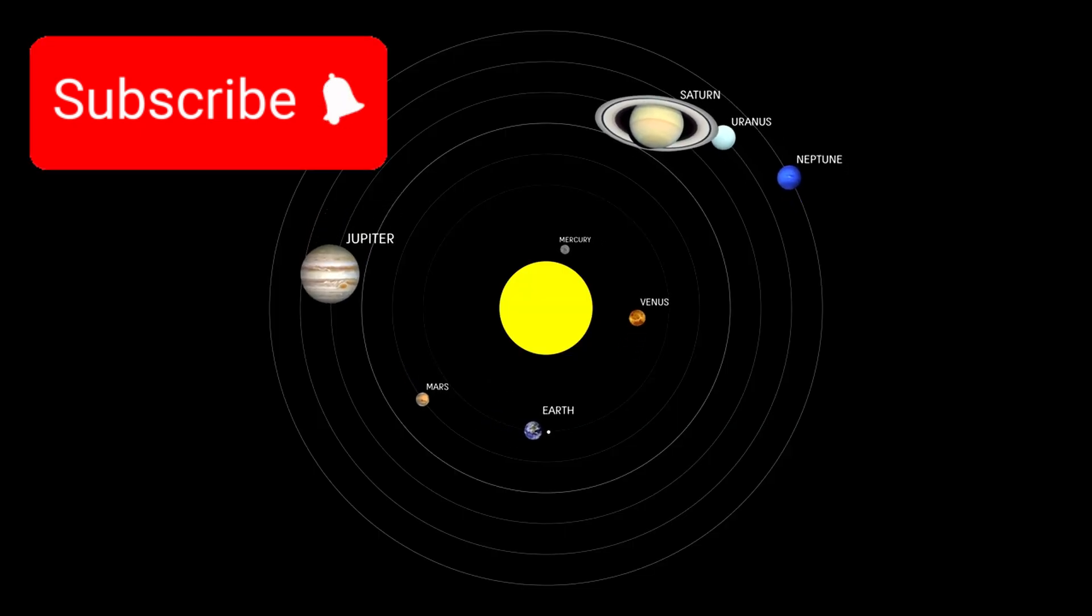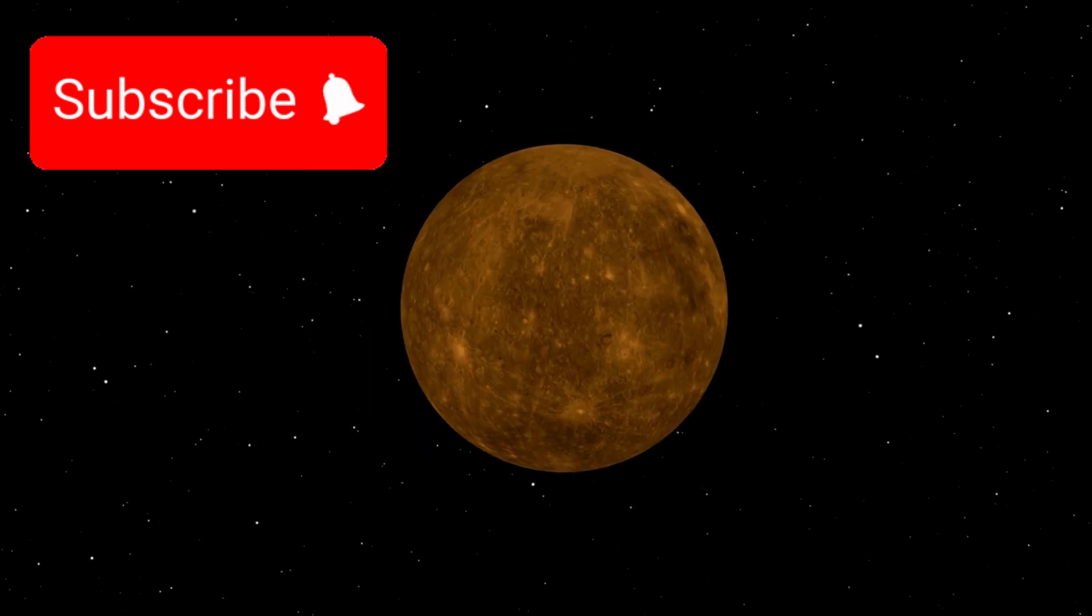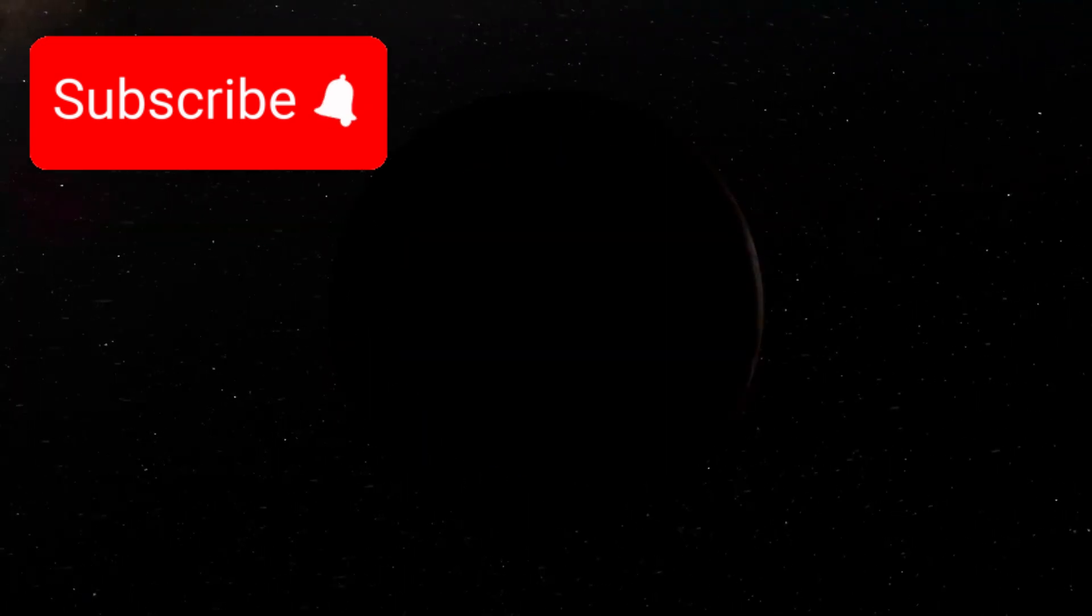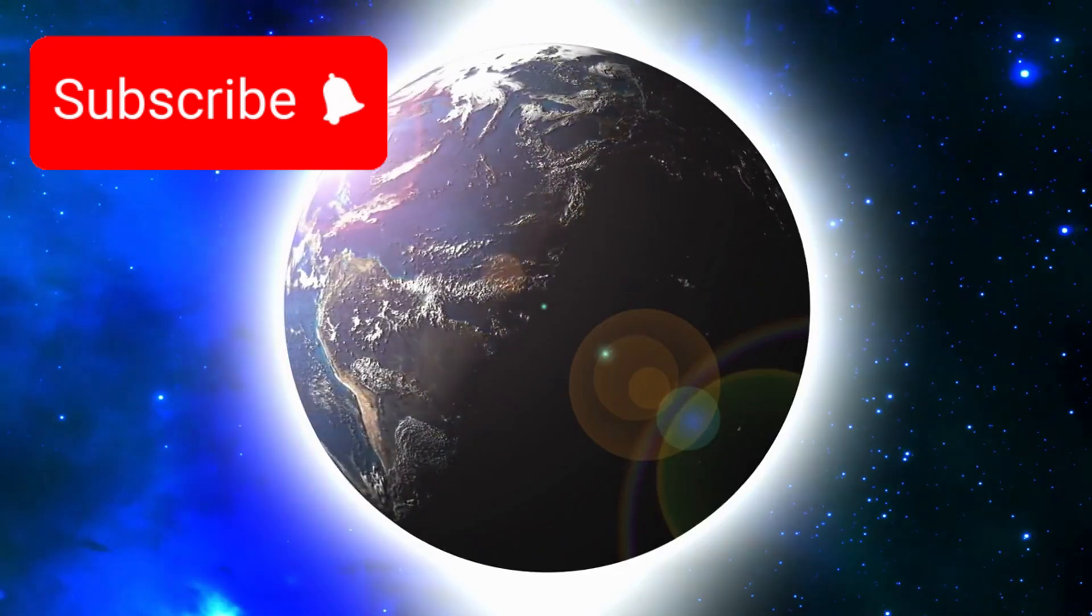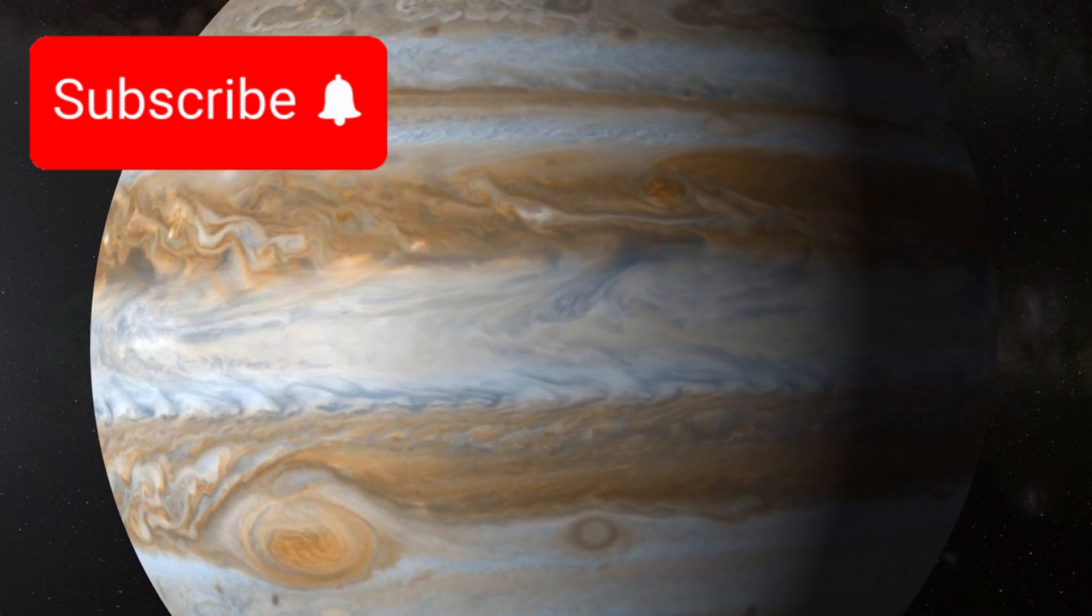One by one it passed the worlds of our solar system: Mercury, Venus, Earth, Mars, Jupiter with its swirling storms and raging winds.